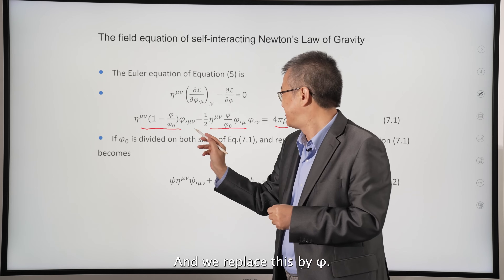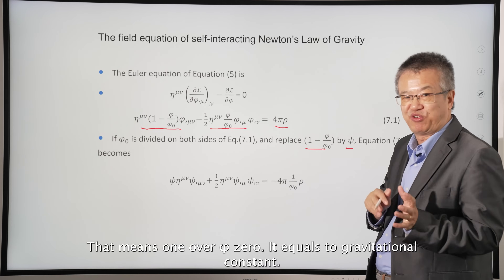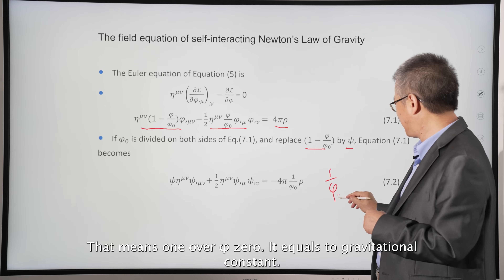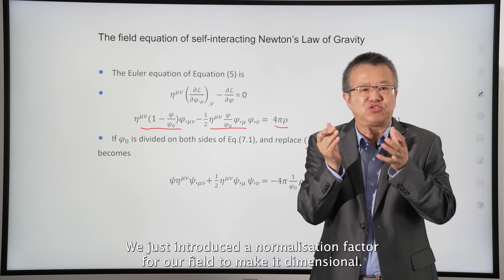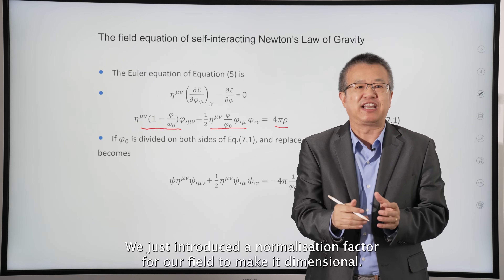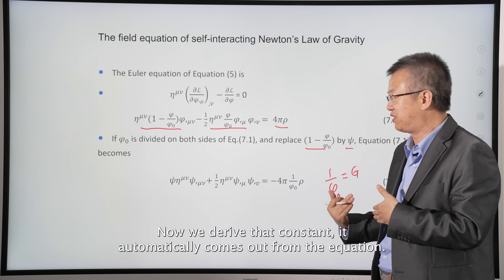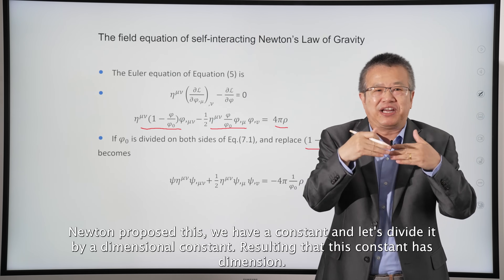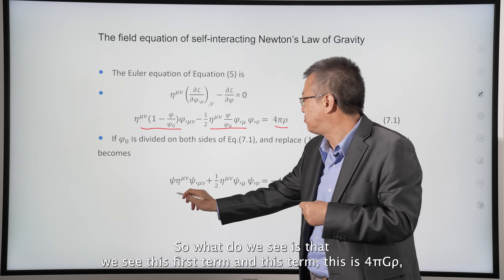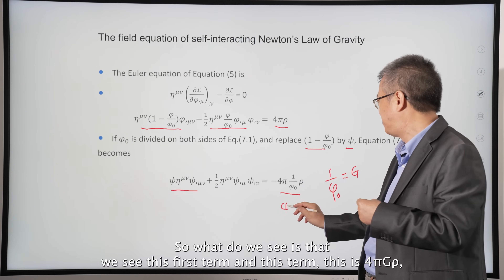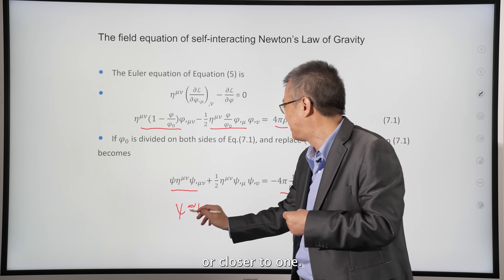If we divide both sides by Phi_zero and replace accordingly, Phi_zero moves to this side. That means one over Phi_zero equals the gravitational constant. So we don't introduce the gravitational constant at the beginning — we just introduce a normalization factor for our field to fix dimensions. I wasn't planning to have the constant appear; we derive that the constant automatically comes out from the equation, rather than Newton proposing it as given. The first term and this term give four pi G times rho.